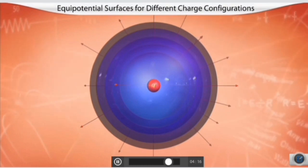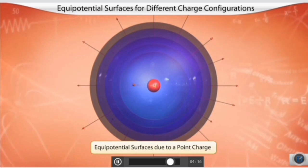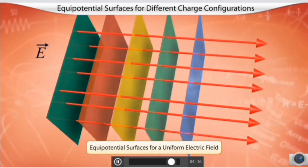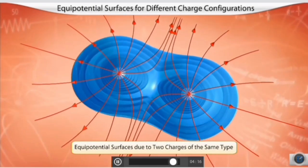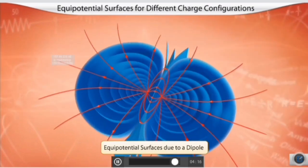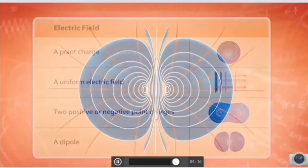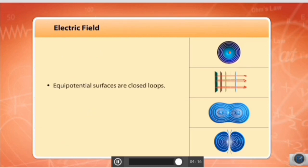Let's now see how these equipotential surfaces look for different charge configurations. You already know how equipotential surfaces look for a point charge. Here is how the equipotential surface would look for a uniform electric field. Here is how the equipotential surfaces for two charges of the same type are represented. Finally, here is how the equipotential surfaces of a dipole are represented. This table provides a 2D representation of the equipotential surfaces for each type of electric field. In all cases, equipotential surfaces are closed loops and they have no direction.